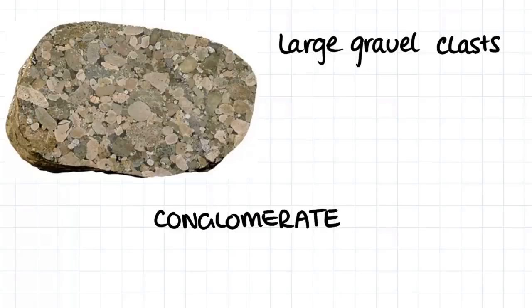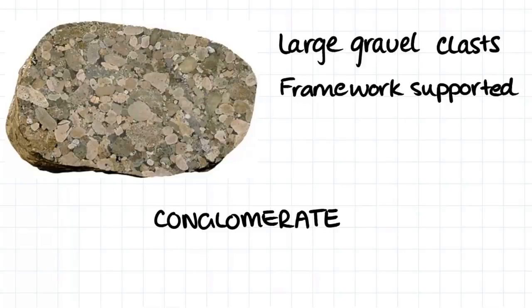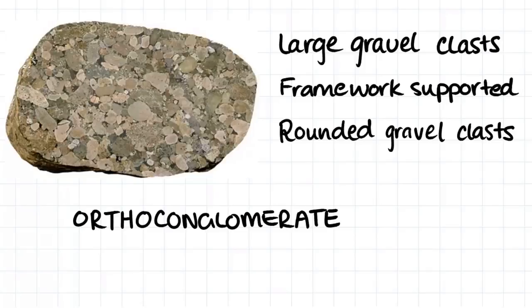Here we have another sample. The grains that make up this sample are large gravel clasts. Therefore, I would call this rock a conglomerate. We can see that the gravel clasts are all touching each other and therefore it is framework supported, so we would call this sample an ortho-conglomerate. The grains are also rounded gravel clasts which confirm the fact that we would call this rock a conglomerate and not a breccia.